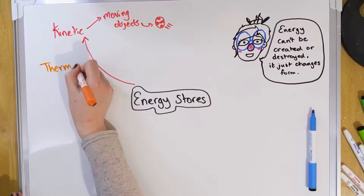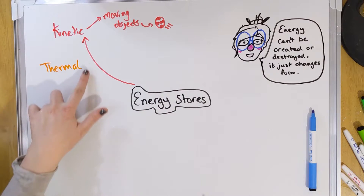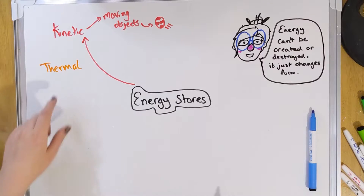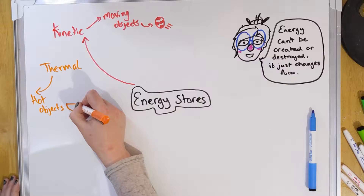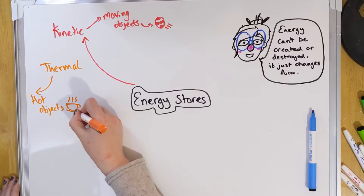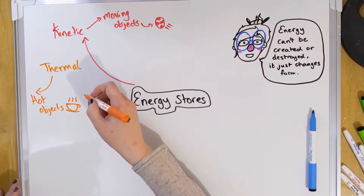Our second store is thermal energy. Thermal — you might associate with putting your thermal underpants on on a cold day to keep you warm — so thermal is to do with heat. It is the energy found inside hot objects, like your cup of tea or coffee. Something to note is all objects have thermal energy in them, even stuff that feels cold like ice. Only when you get down to zero degrees Kelvin — another form of measurement like Celsius and Fahrenheit — do particles physically stop moving, and that's when we say the thermal energy store is depleted. But the hotter the object, the bigger that thermal energy store.